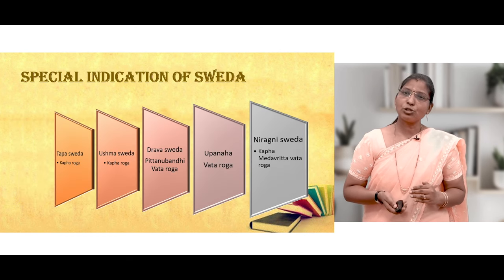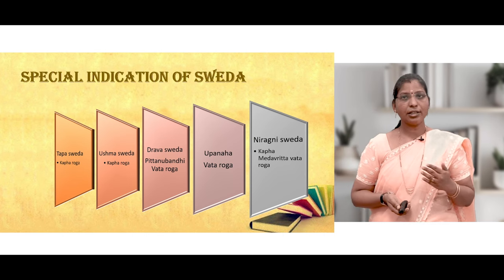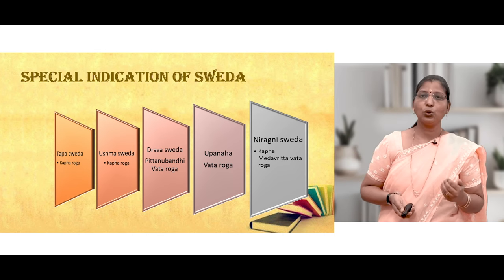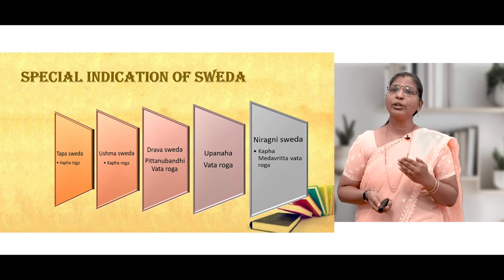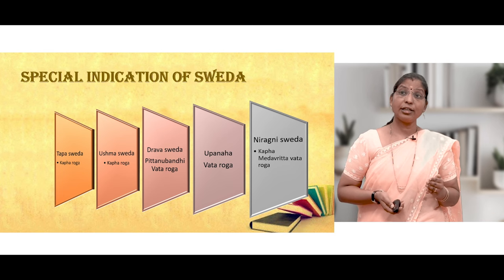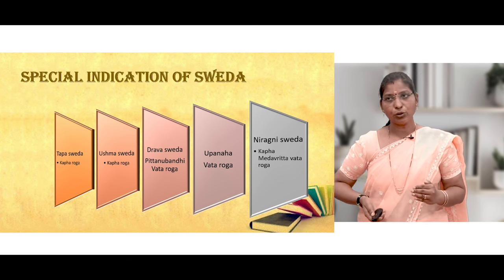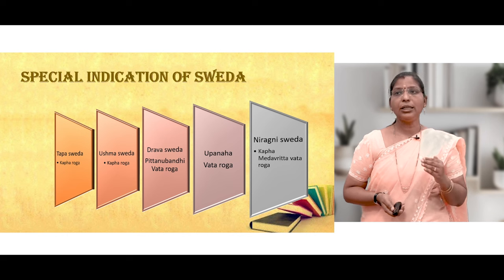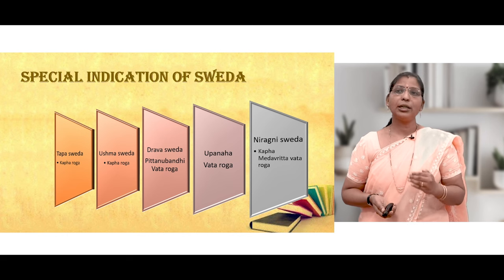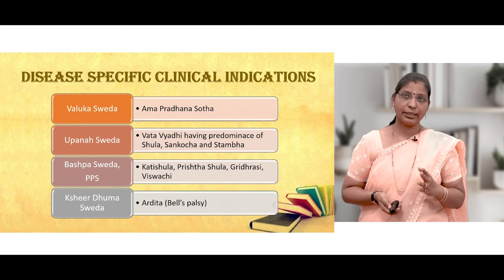Special indications by type: Tapa Sweda is indicated in Kapharoga; Ushma Sweda is also indicated in Kapharoga; Drava Sweda is indicated in Pitthanubandhi Vata Roga; Upanaha is indicated for Vata Roga; and Niragni Sweda is indicated for Kapha Medavuruta Vata.